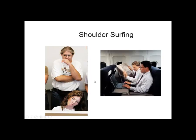Shoulder surfing occurs when an attacker watches another person's computer screen over that person's shoulder. It is particularly dangerous in public areas such as airports, commuter trains, and on airplanes.